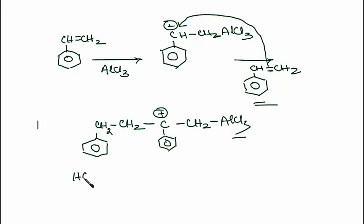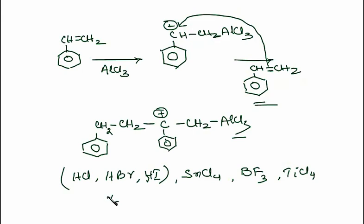It can be HCl or HBr or HI or Lewis acids. Can you tell me the examples of Lewis acids? They are your SnCl4, stannic chloride or boron trifluoride or titanium tetrachloride or it can be I2 or AgClO4. So, a cationic polymerization is initiated by a Lewis acid.